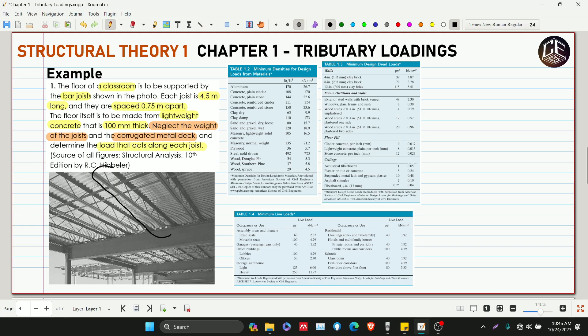These are the joists and the corrugated metal deck. On the corrugated metal deck, the lightweight concrete slab that is 100 millimeters thick is placed. These are the girders, but we're not asked to find the load that will transfer from the joist to the girders. The question is asking for the loadings that will be carried by the joist.